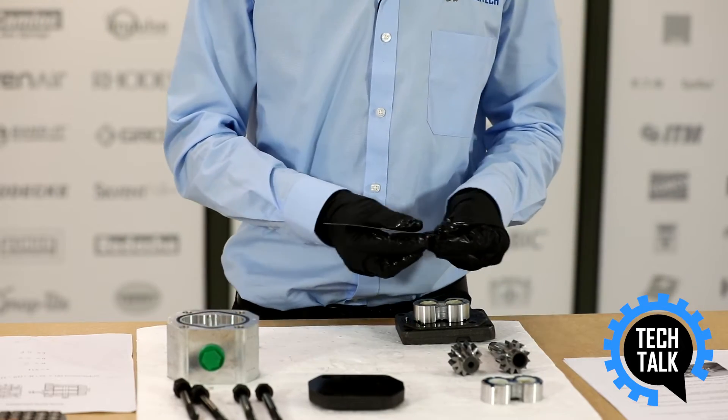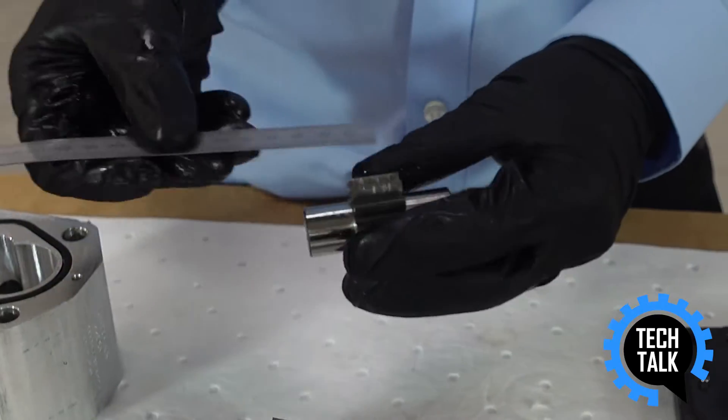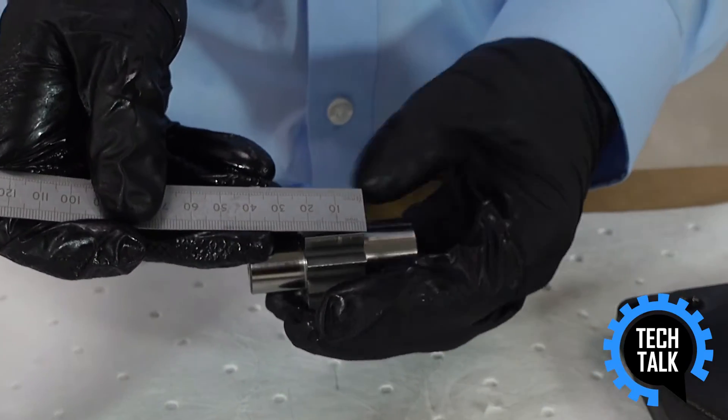The first measurement we need is the gear width, which is the width of the gears across, so that is 20 millimeters or 2 centimeters.